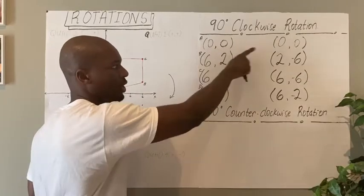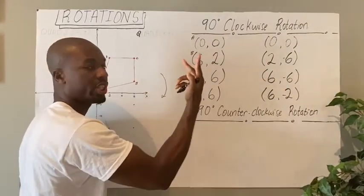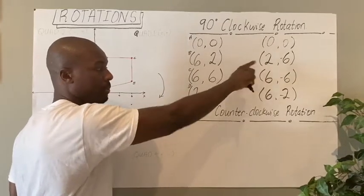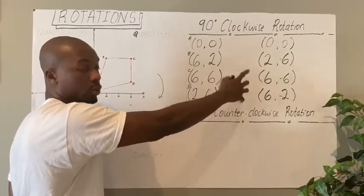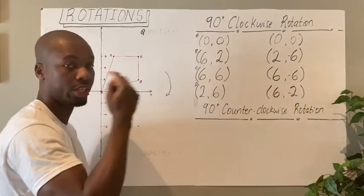So for the first point, 0, 0 stays at 0, 0. 6, 2 switches to 2, 6. 6, 6 switches to 6, 6. And then 2, 6 switches to 6, 2.